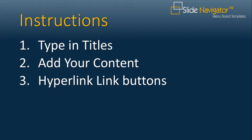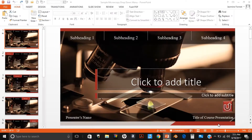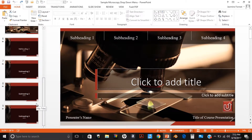We are going to be following three simple steps. The first step is to type in titles, just like you would for any PowerPoint template you use. When you download a drop-down menu template from slidenavigator.com, you will see your menu slides and your content divider slides. Your menu slides are the first five slides that you see on the left. The menu slides are an outline of your presentation. The other slides are your content divider slides.